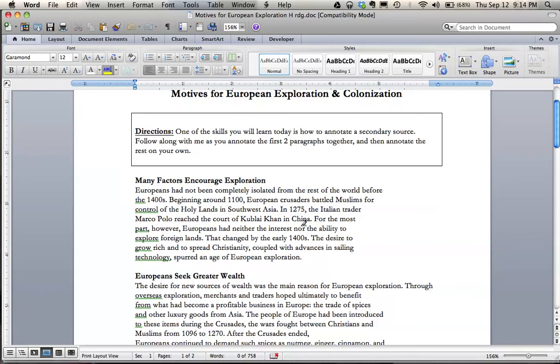Okay, so I'm going to stop at the end of my paragraph. I'm looking for the main idea. And as I'm reading along, it sounds more like an introduction. So it's almost an inverted triangle. I have Europeans hadn't been interested, maybe other European crusaders, and it's talking about some Italian trader. For the most part, they had neither the interest, but that changed in the 1400s. So this is my cue that the next part is what we're really getting at. So this sentence here, the desire to grow rich and to spread Christianity, that's going to be my main idea.